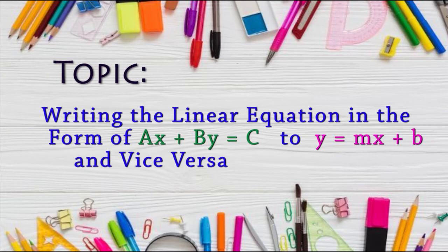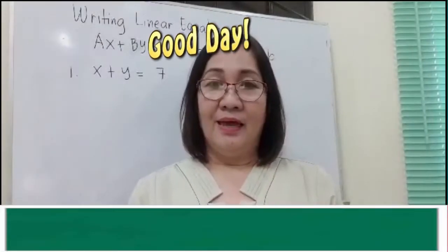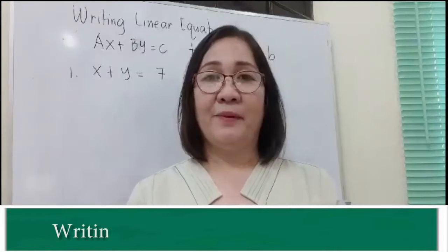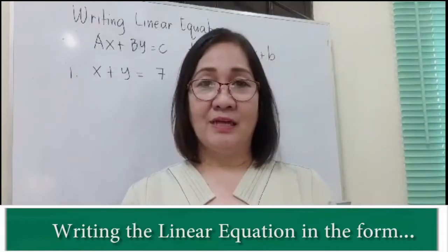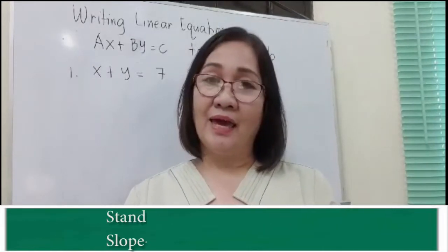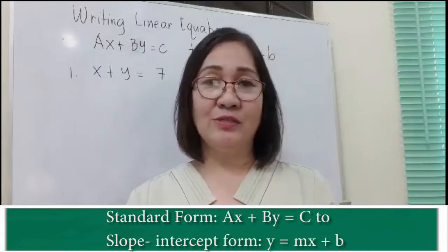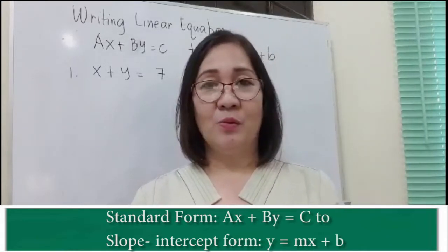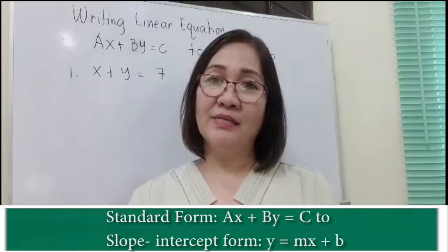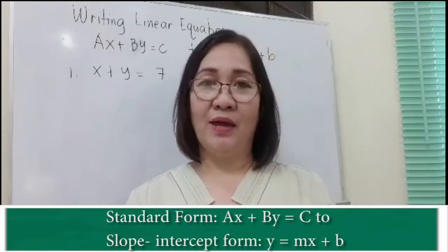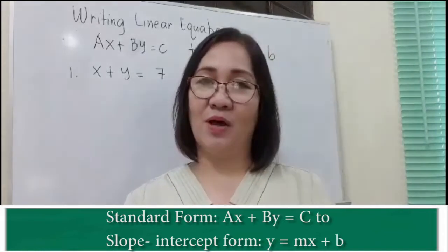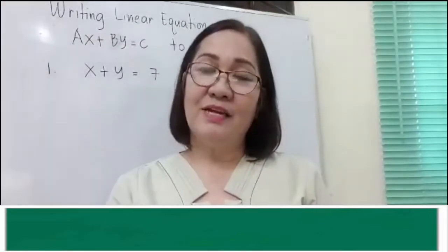Good day everyone! Our topic is about writing the standard form of a line, ax plus by is equal to c, to slope-intercept form, y is equal to mx plus b, where m is the slope and b is the y-intercept. Let's take an example.